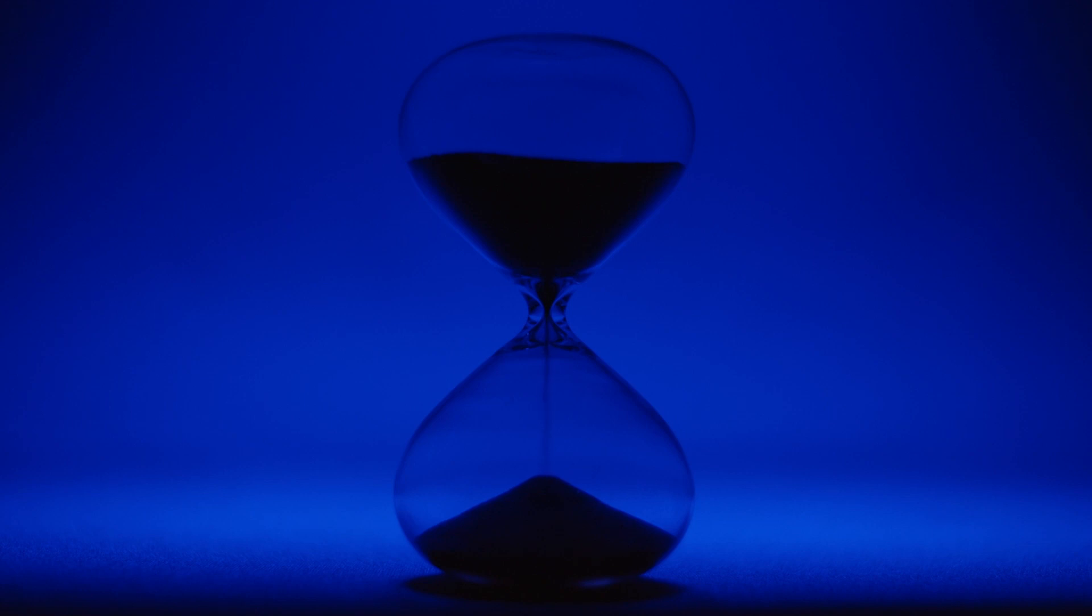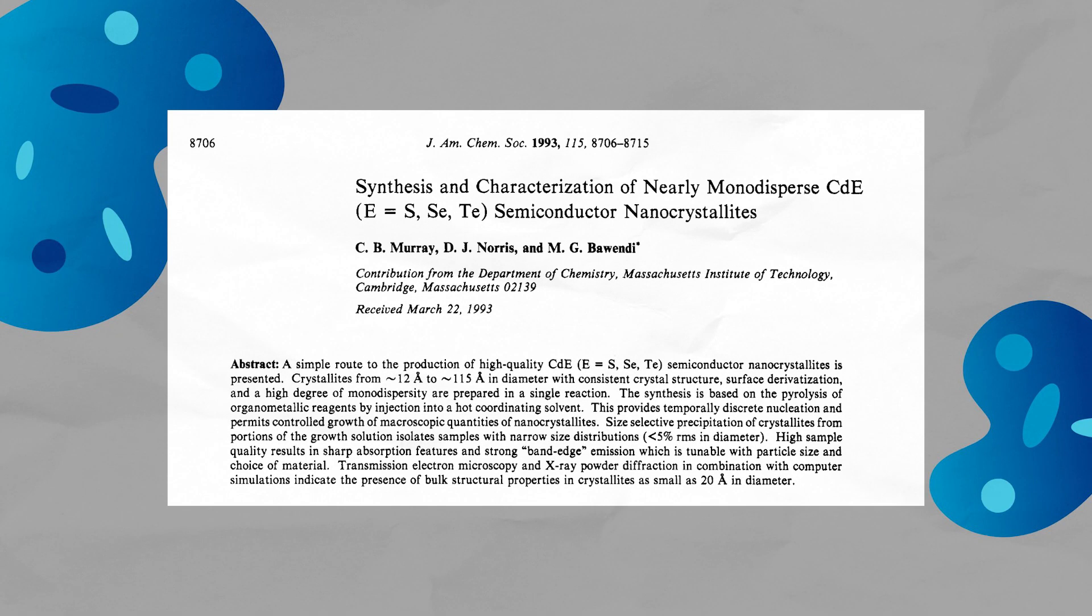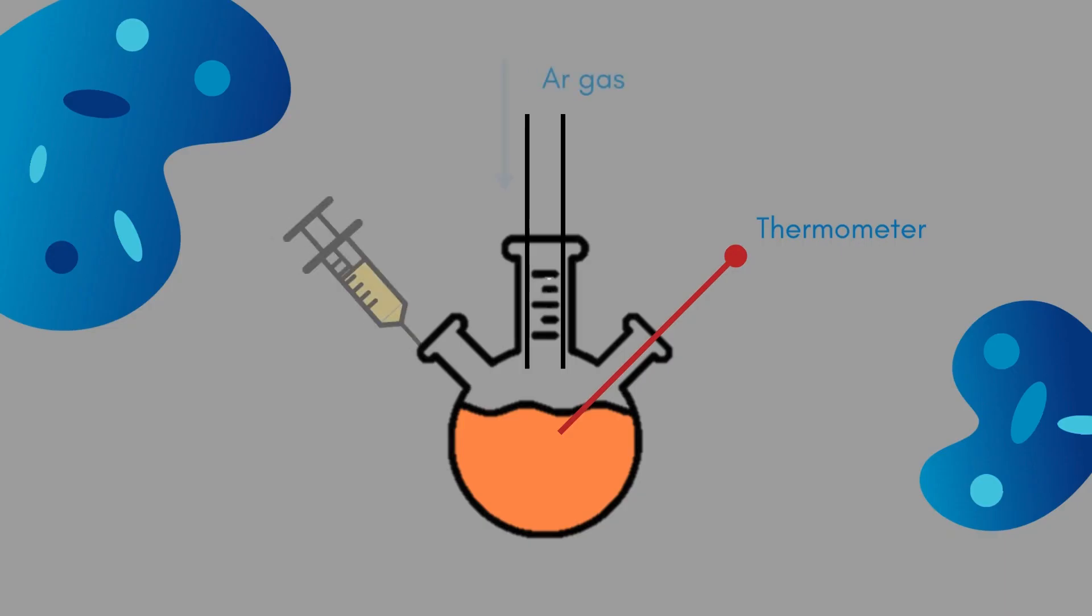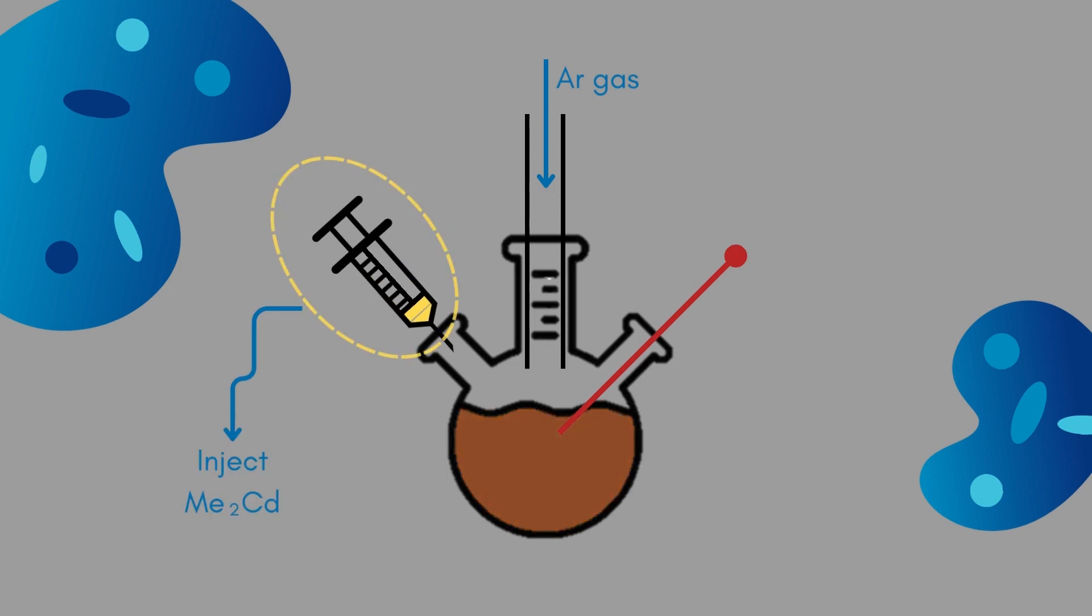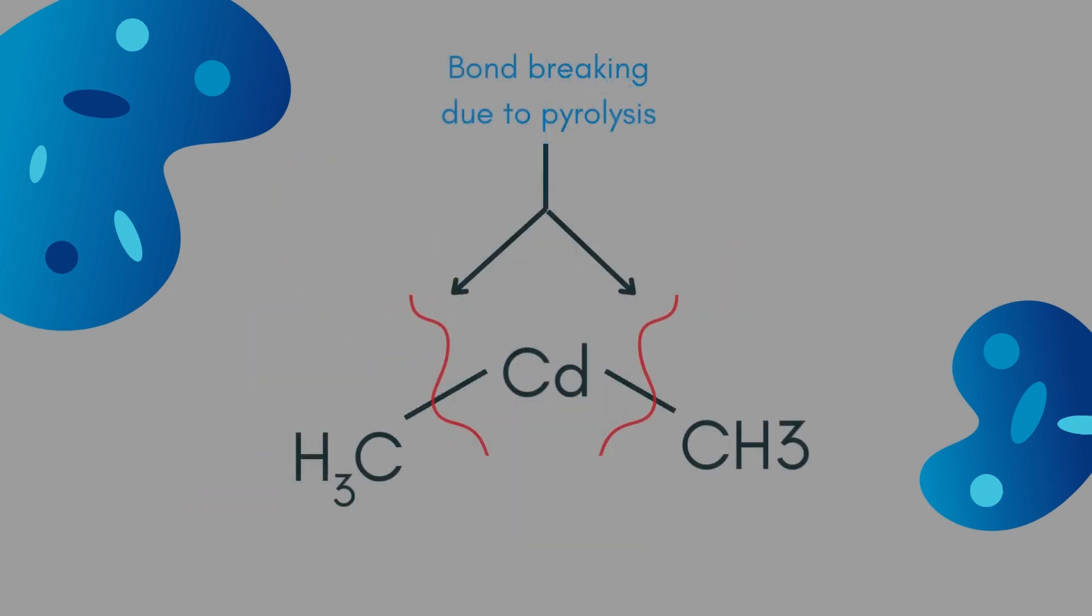We come across a pivotal moment in 1993 when Moungi Bawendi and his dedicated team pioneered a method that revolutionized the synthesis of quantum dots. Their novel approach yielded quantum dots of significantly well-defined sizes and unparalleled optical quality. This synthesis method started with the injection and swift pyrolysis, a chemical process where substances are broken down by high heat, of organometallic reagents.